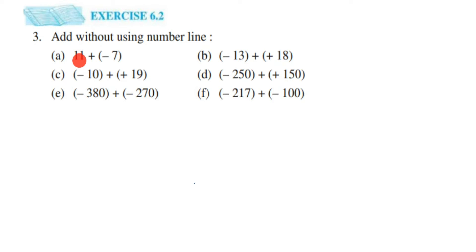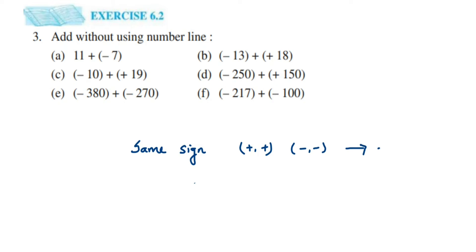Before we solve this, we have to remember a few rules for adding two integers. Whenever we are adding two integers with the same sign — same sign means positive-positive or negative-negative — you have to always add the numbers and then keep the sign. For example, two plus two equals four — just add them.